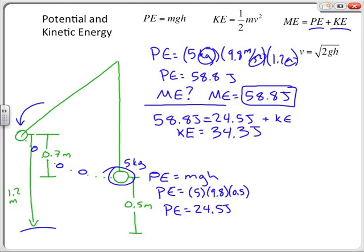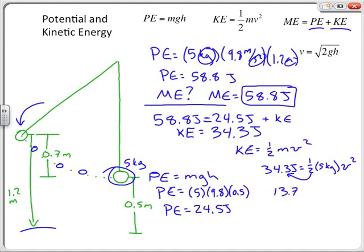To find the speed at the bottom location, I use KE = ½mv². Setting 34.3 joules equal to ½ × 5 kg × v², I multiply both sides by 2 and divide by 5, giving v² = 13.72, so the velocity equals 3.7 meters per second.